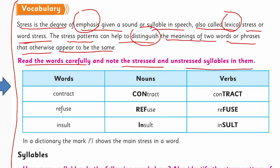There is a word 'contract.' The bold letters here are the stressed ones. C-O-N, 'con,' and the whole word is 'contract.' So 'con' is related to the noun category. 'Con' is one syllable — three letters but one syllable — and 'tract' is one syllable but four letters. We have divided it and the emphasis is on 'con' for the noun form.